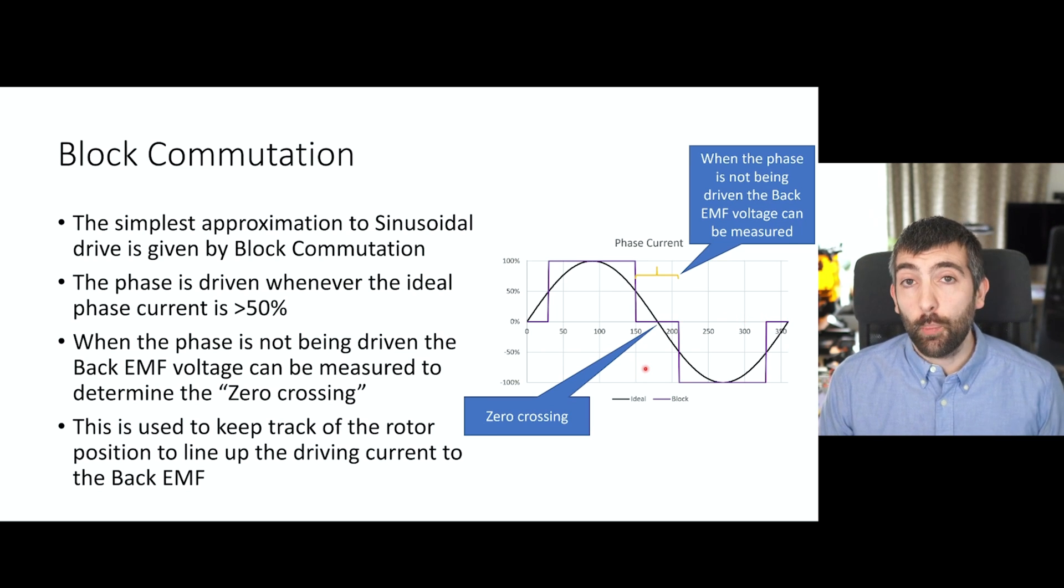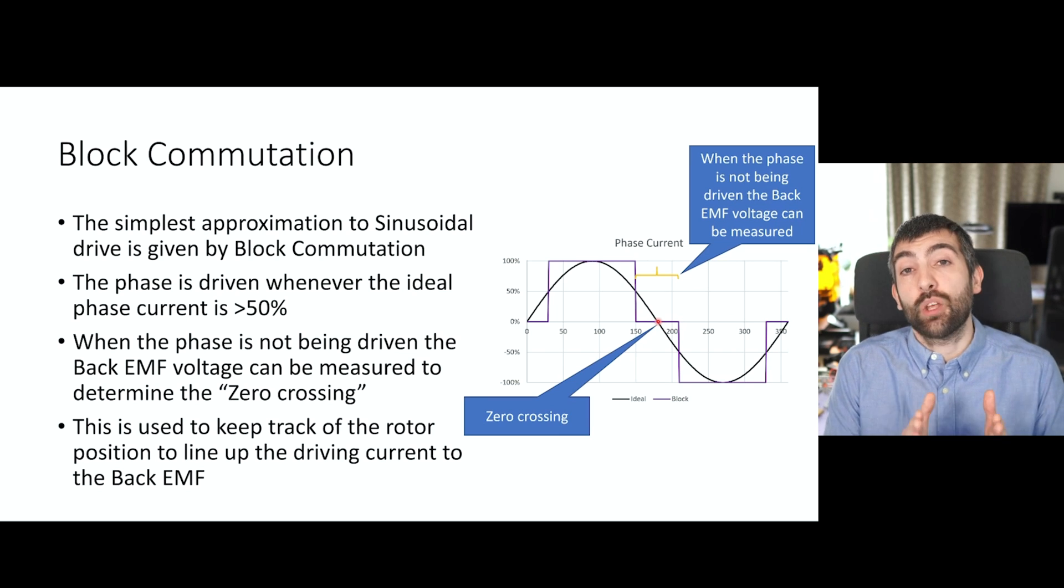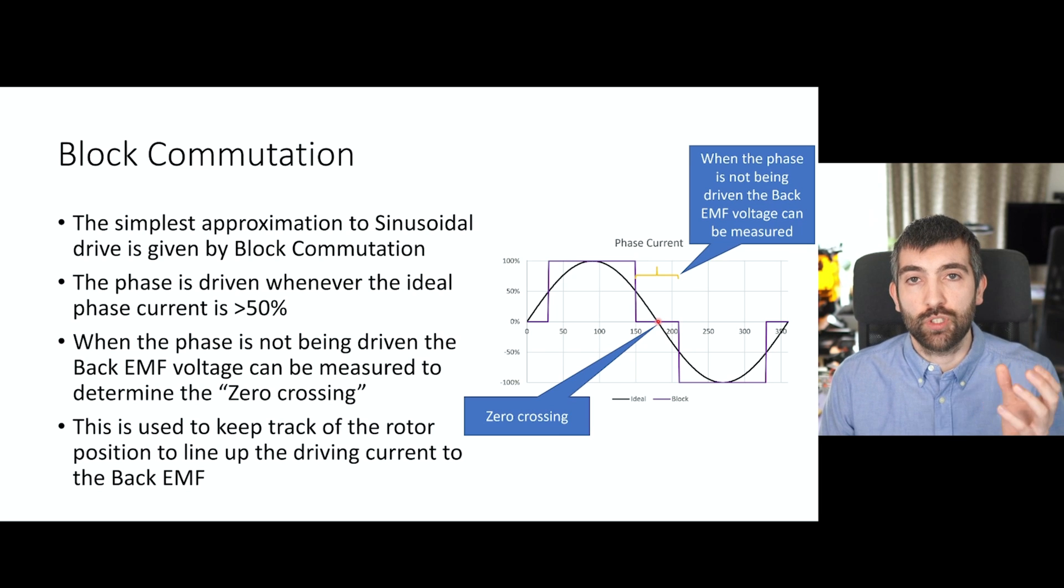Whenever the phase is not being driven, the voltage created by the back EMF current can be measured and that can be used to determine the rotor position. So the ESC looks for what's called the zero crossing. That's where the back EMF current and therefore back EMF voltage crosses zero, and that indicates that the magnet is precisely opposite the coil and it basically tells the ESC where the rotor is so that it knows how to drive the rotor round and round.